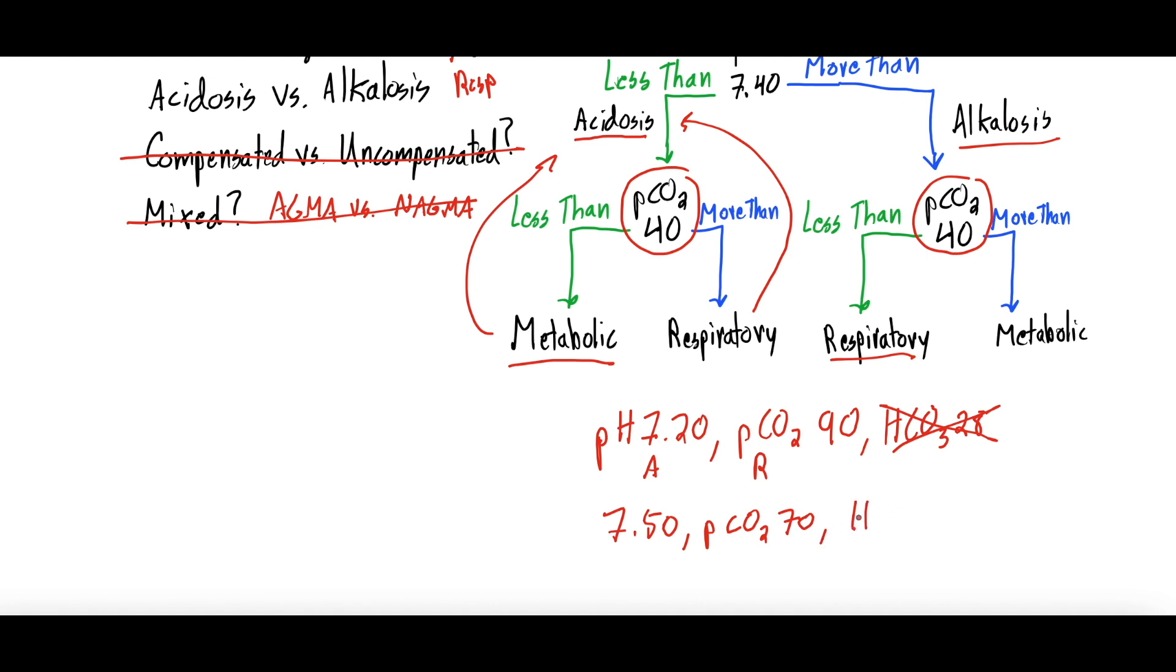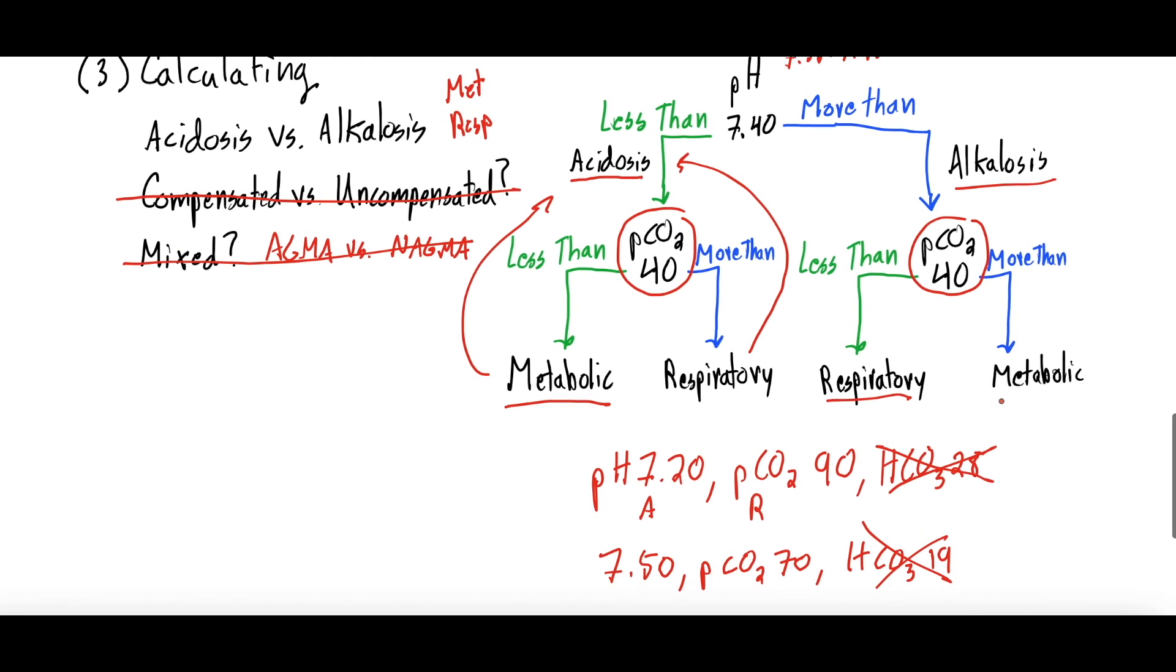Contrarily, let's say your pH is 7.50, and your PCO2 is 70, and your bicarb in this instance will be - I don't know, choose anything - 19. Again, we're not looking at bicarb to determine these. Your pH is more than 7.4 - it's 7.50. Your PCO2 is more than 40, so it's a primary metabolic alkalosis. So it is an alkalosis and it is metabolic.